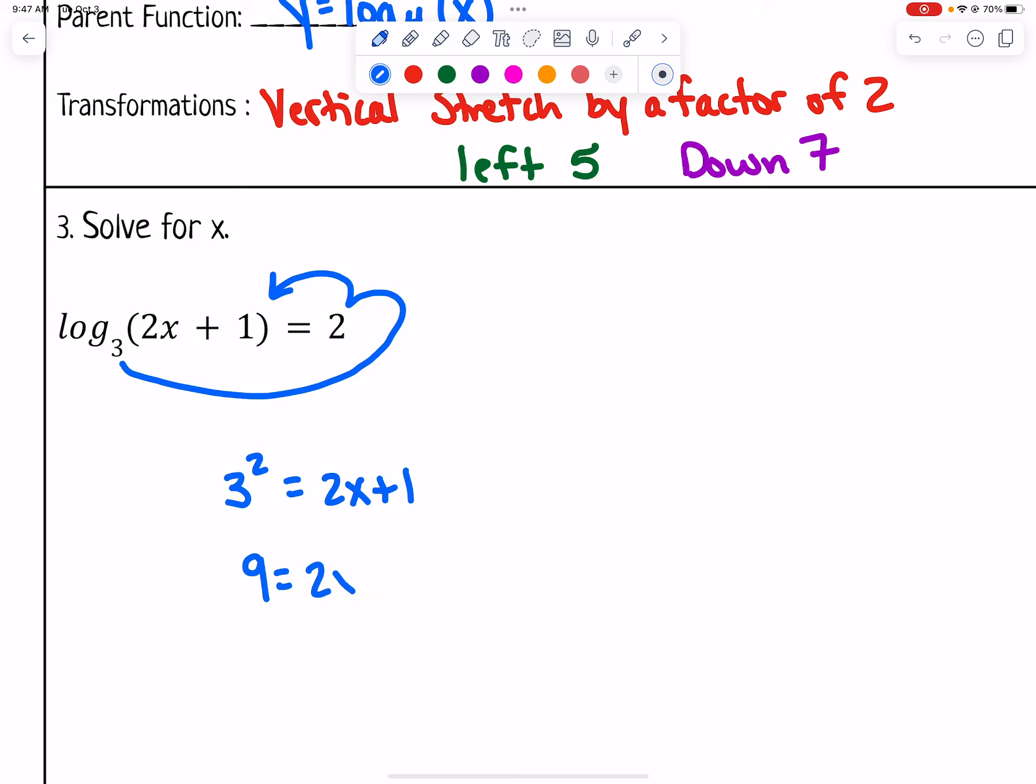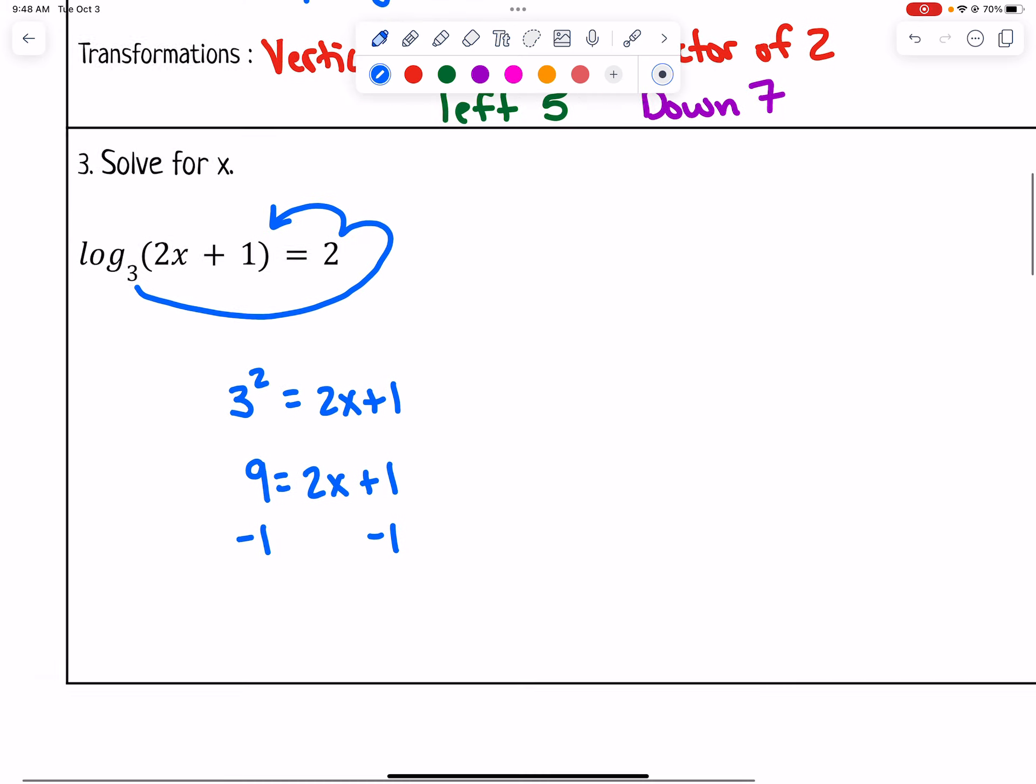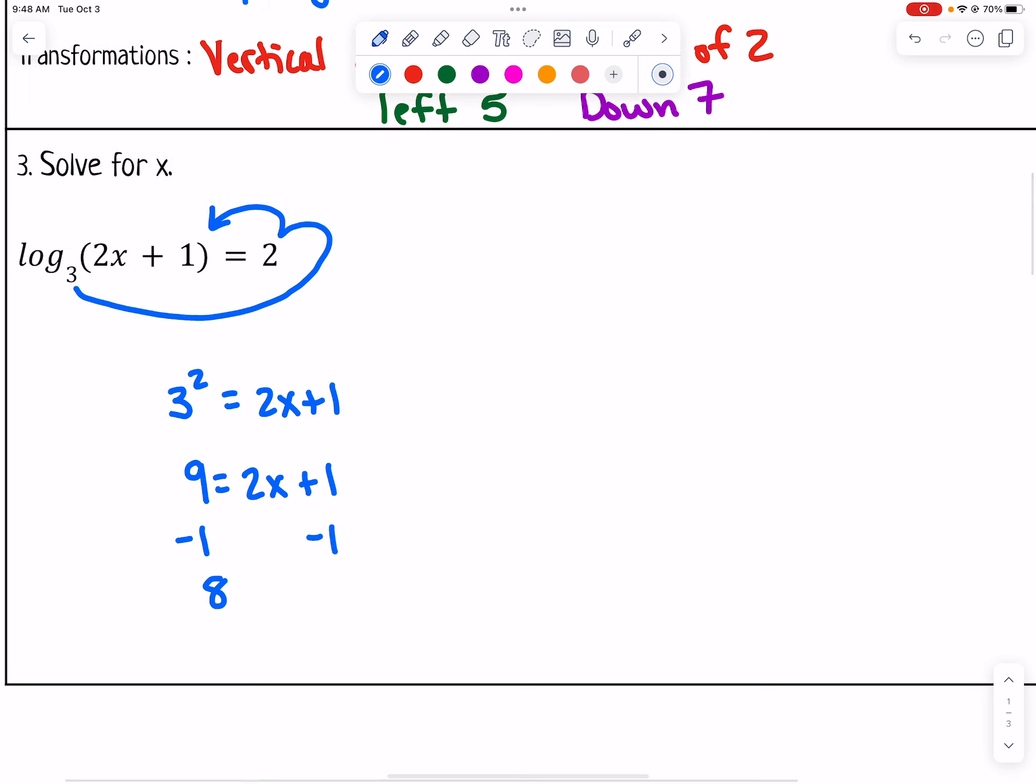We end up with 9 = 2x + 1, and then we have to solve from there. I'm going to subtract 1 and get 8 = 2x. Then divide both sides by 2 and I get x = 4.